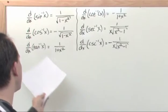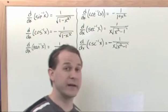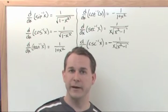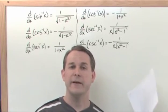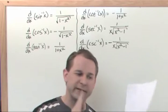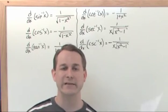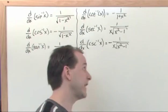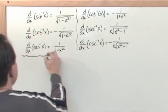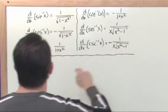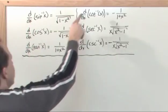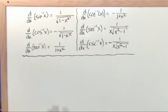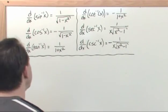The reason these derivatives work out so nicely is precisely because of the range of angles that were picked when defining these inverse functions. Those specific ranges lead to these very nice, symmetric derivatives. So for every inverse trig function we've talked about, we have a corresponding derivative. Put these in your bag of tricks along with everything else you know how to differentiate.